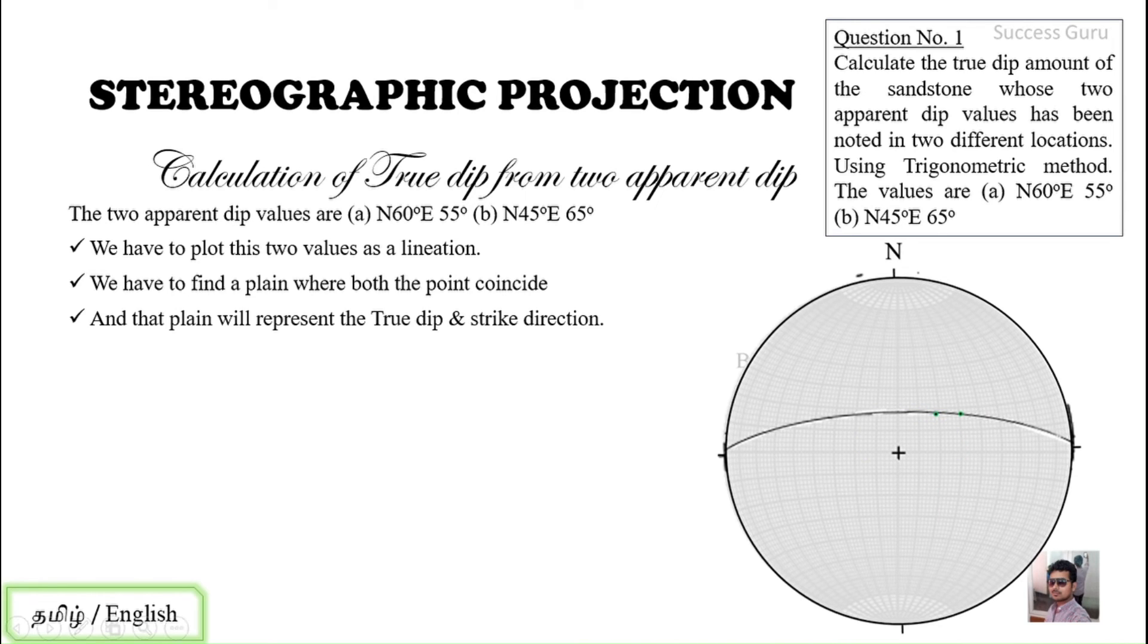From that we can find out the strike direction is N92E or N272E, and the dip direction is N2° E and the dip amount is 74 degrees. This is somewhat the same answer for this question which we solved using trigonometric as well as geometric methods.